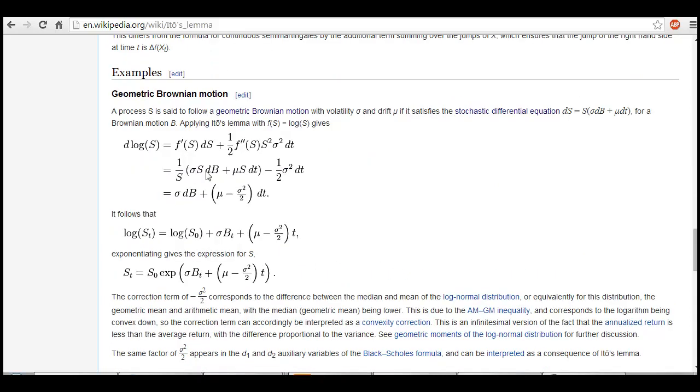You can solve this by half sigma squared dT if you keep other things as is. When you do that, this term gets broken off—this sticks with dT and this sticks with dB_T.